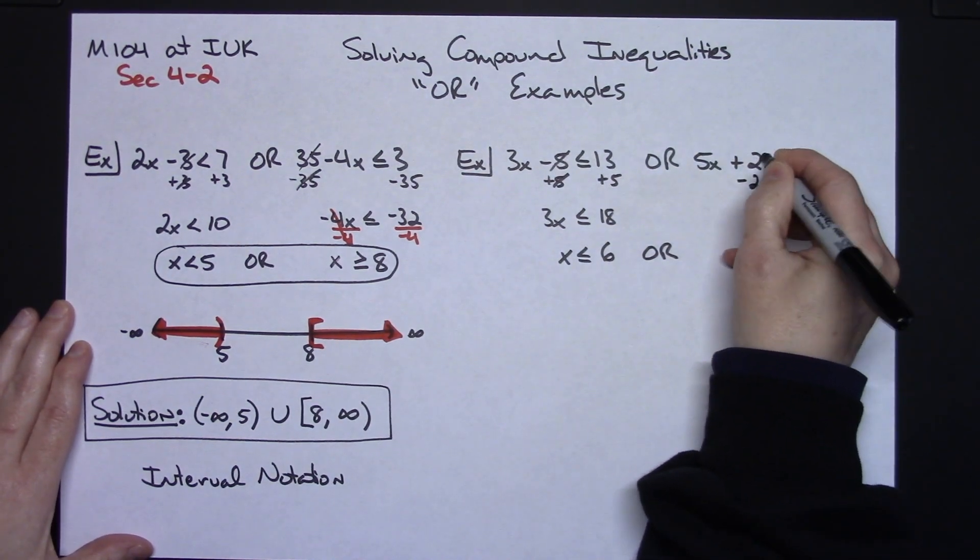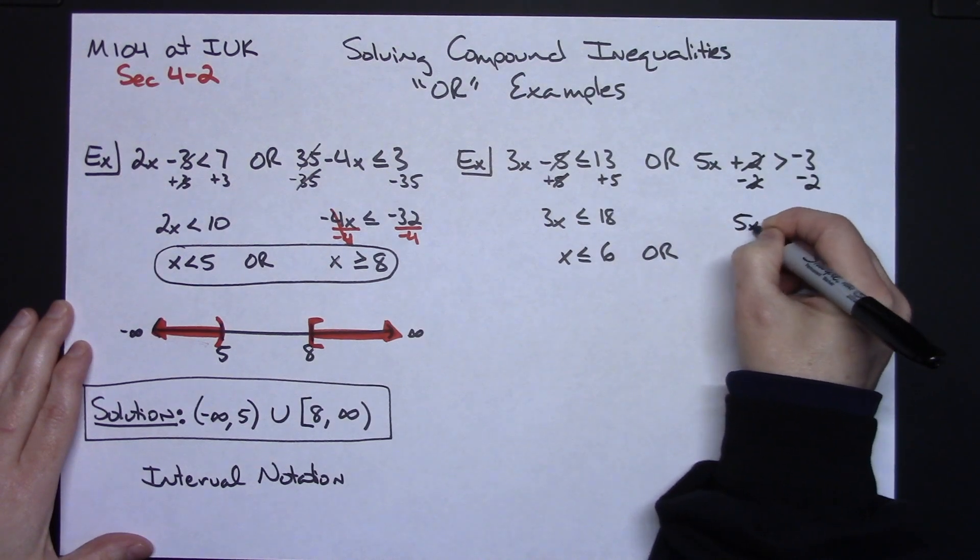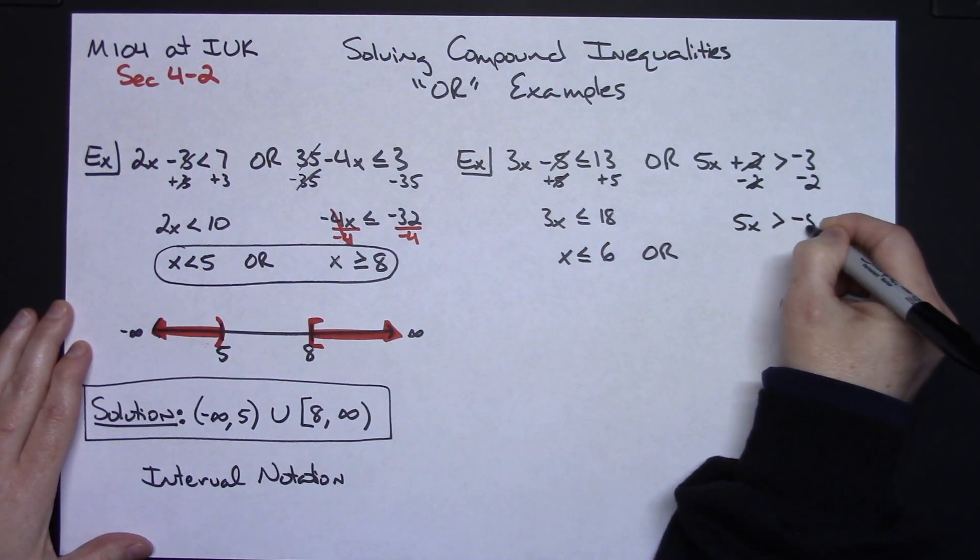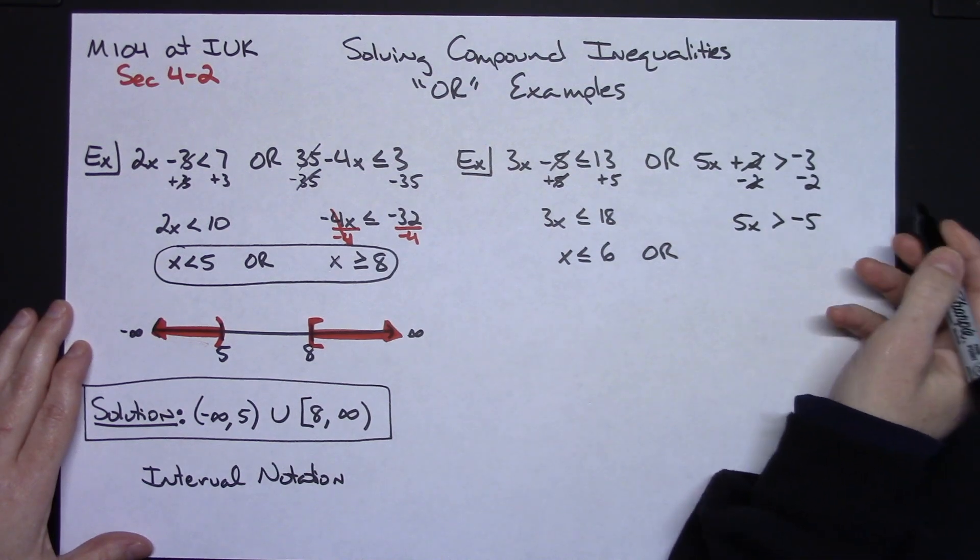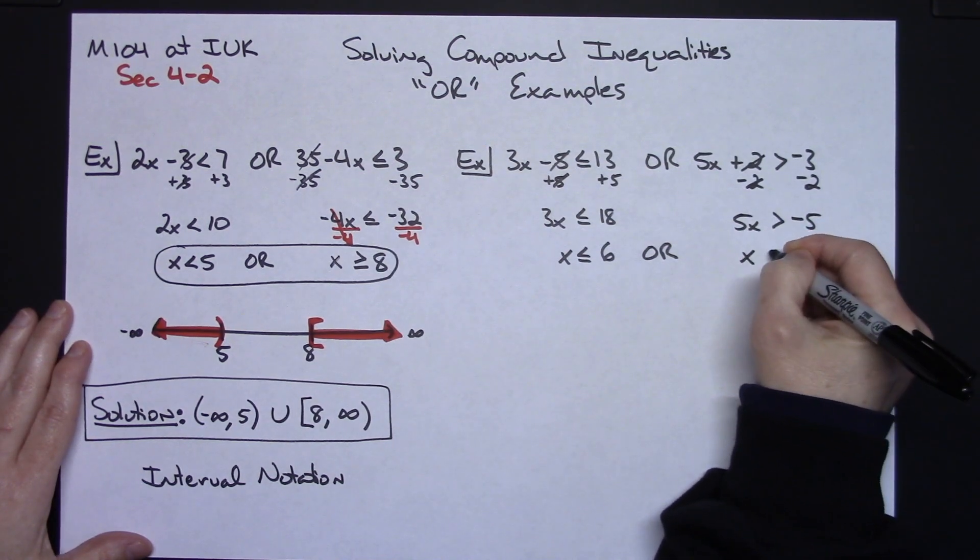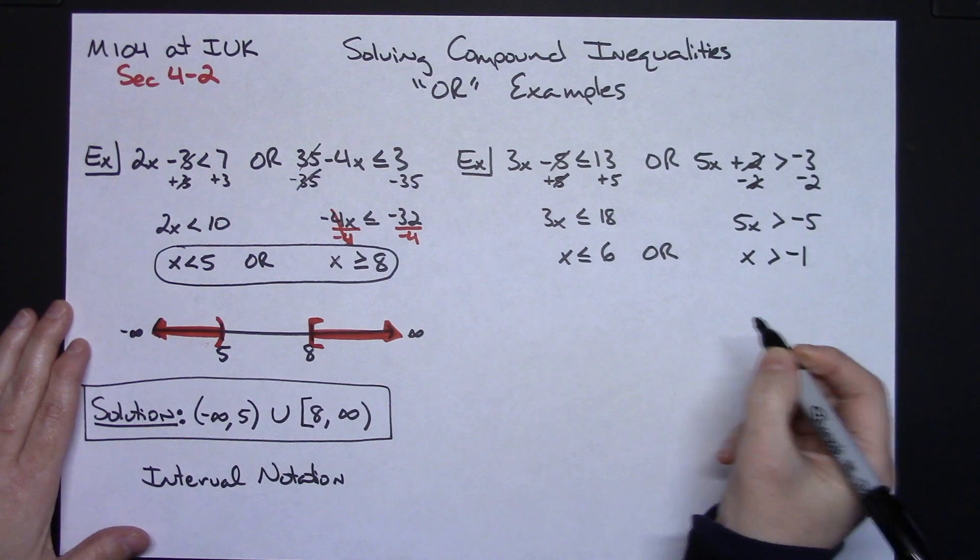Now solving this inequality, we'll subtract 2 from both sides of the equation. I'm going to have 5x is greater than negative 5. Dividing by 5 there does not mean anything, so I don't have to flip the sign or anything. x is greater than negative 1.